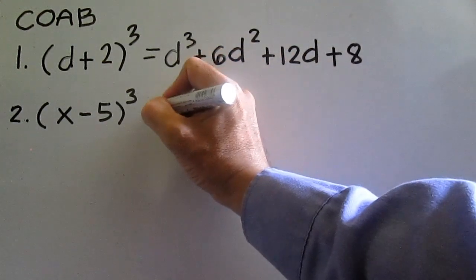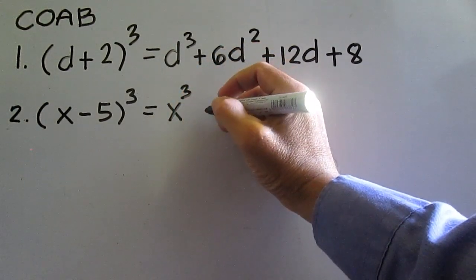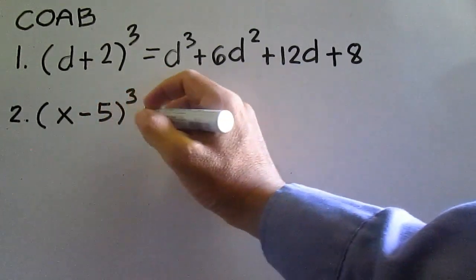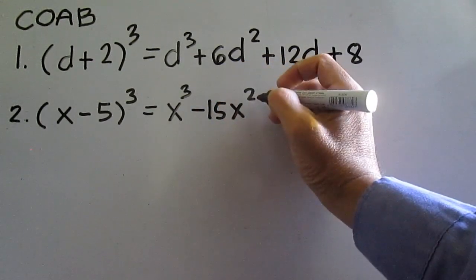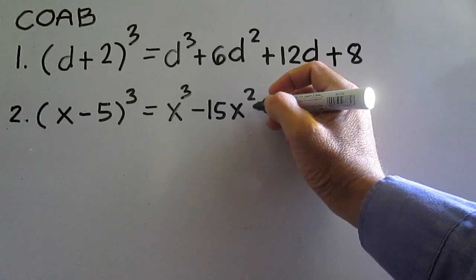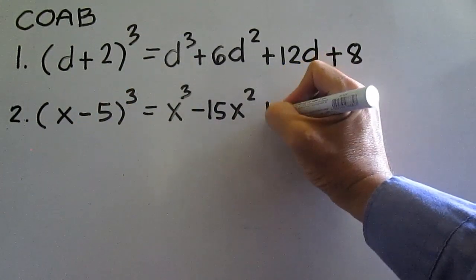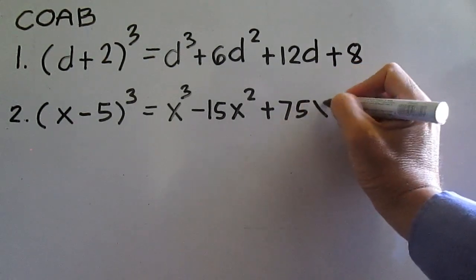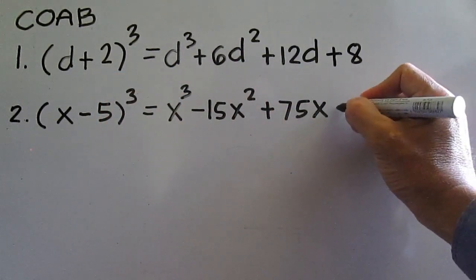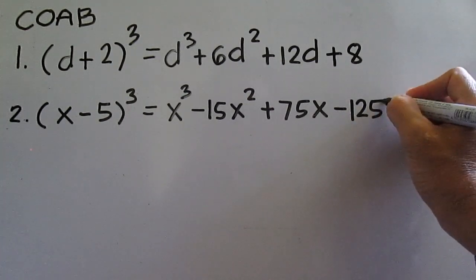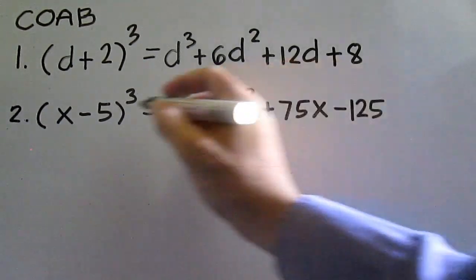The cube of the quantity x minus 5 is equal to the cube of the first term x cubed, then thrice the product of the square of the first term and the second term: 3x squared times negative 5 is negative 15x squared. Then thrice the product of the first term and the square of the second term: negative 5 times negative 5 is 25, times 3x is 75x. Then cube of the second term: negative 5 times negative 5 times negative 5 is negative 125, write minus 125. Note: plus minus plus minus in the sign gives a minus sign.